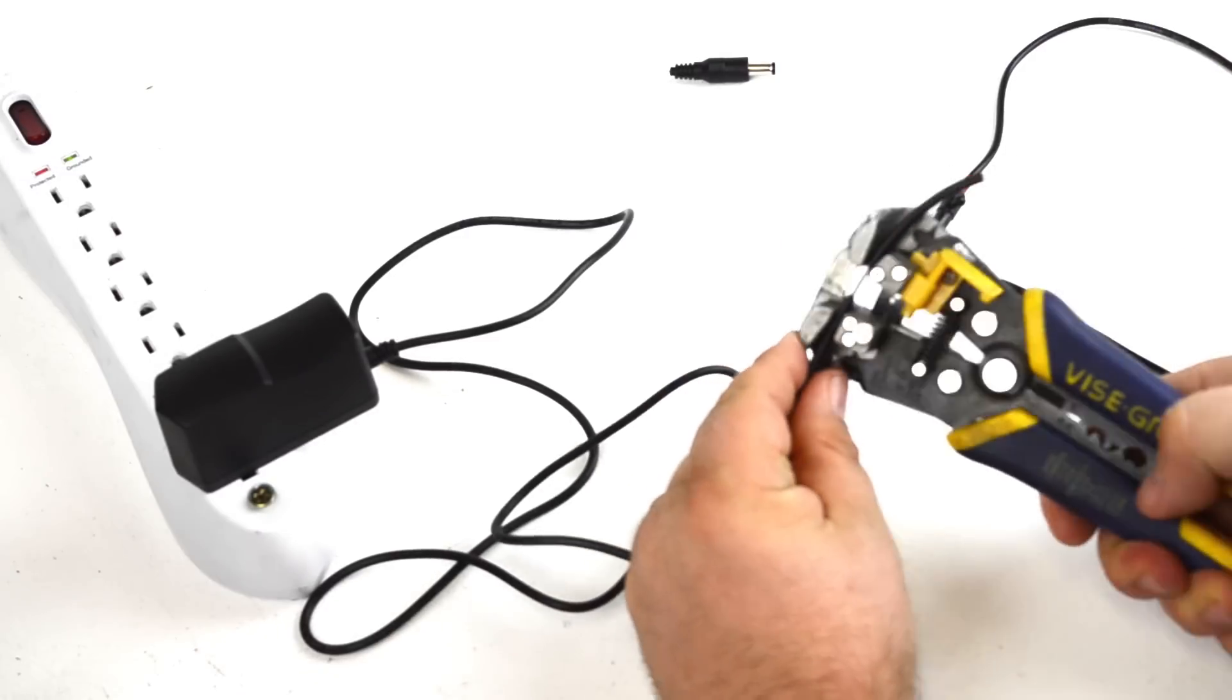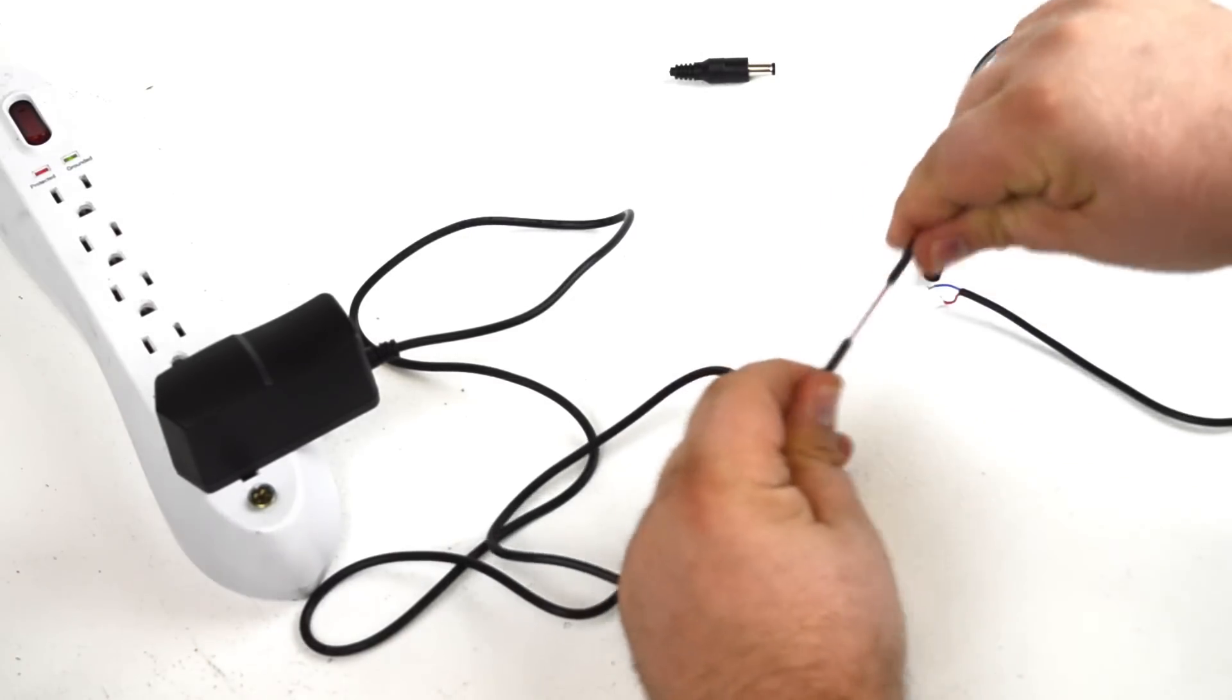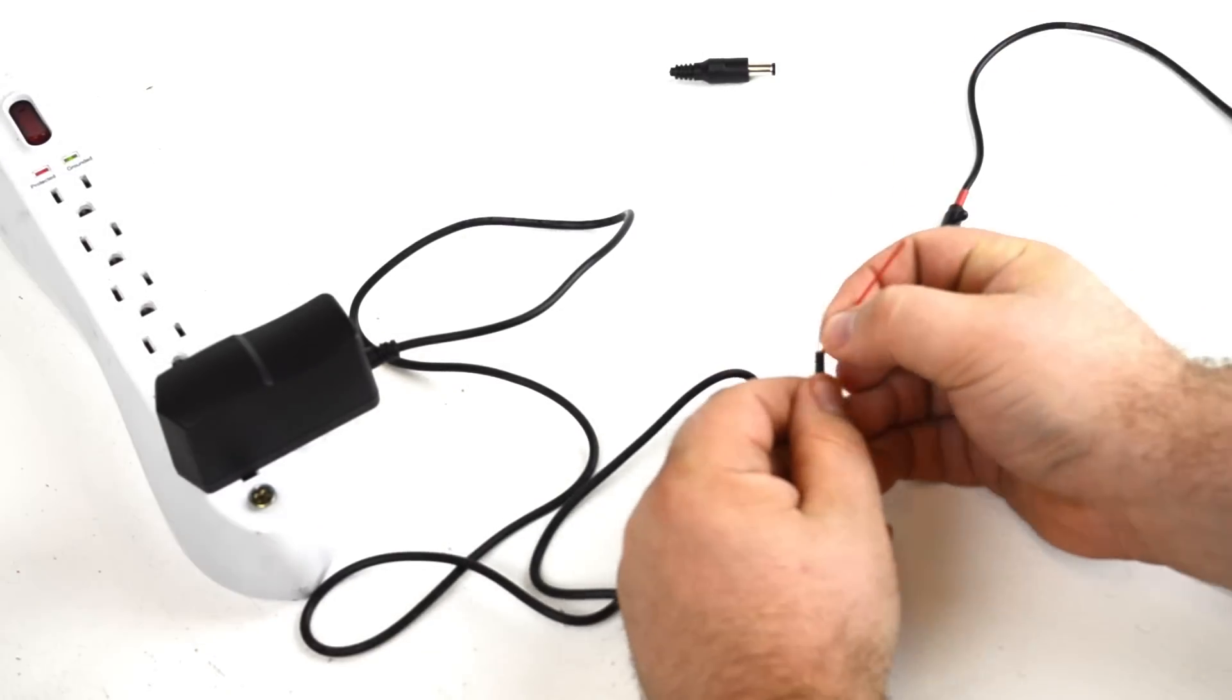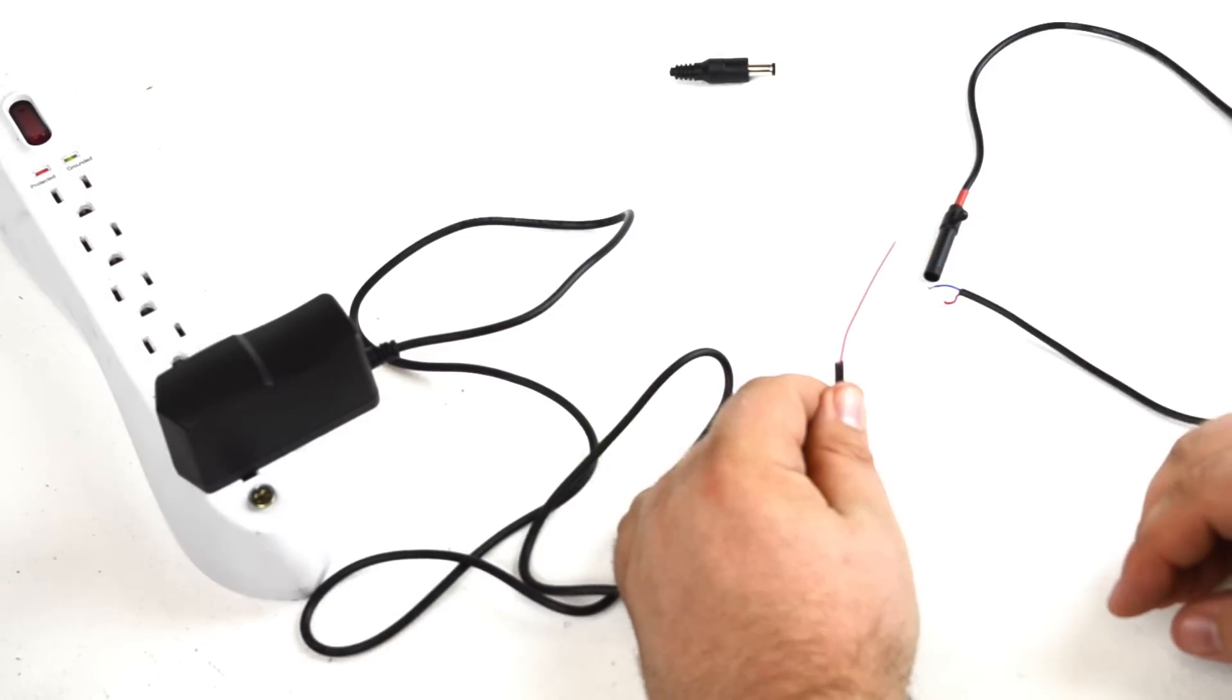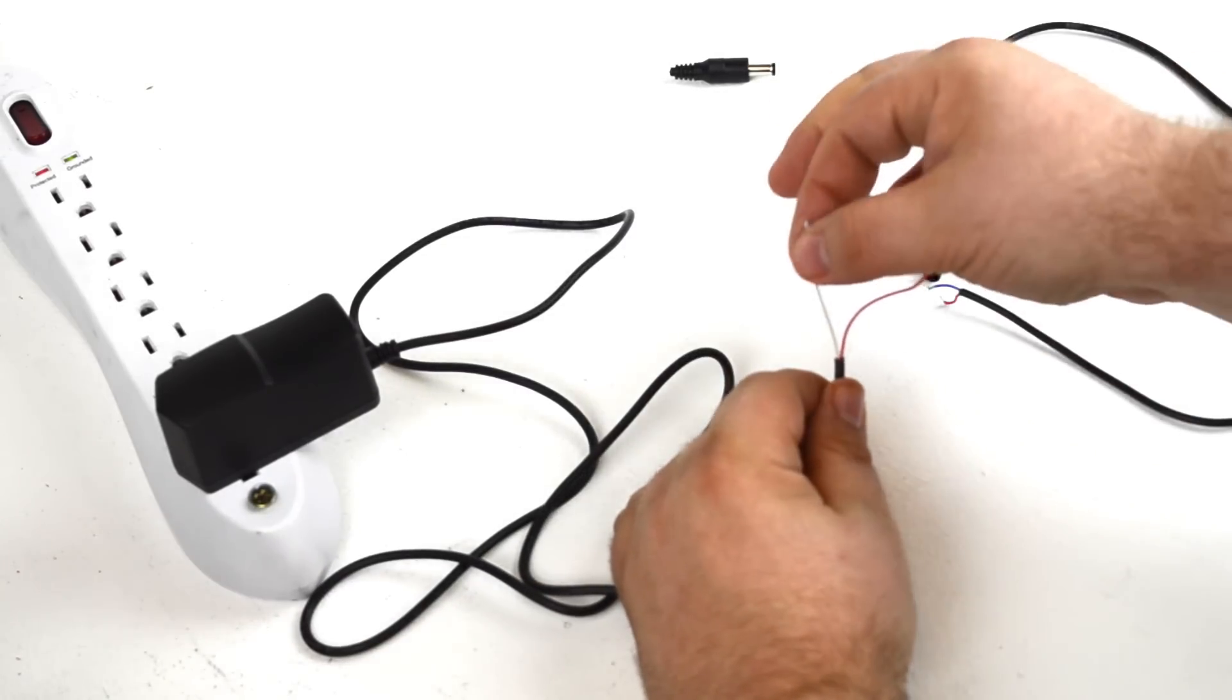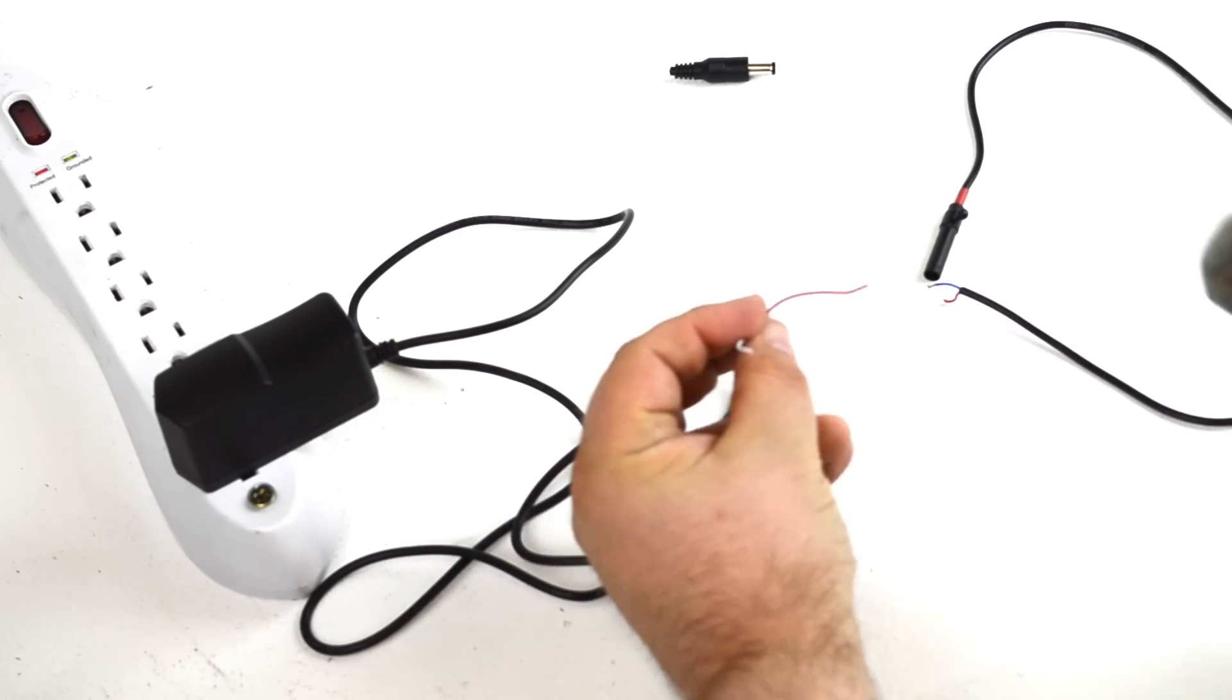So we can take our wire stripper, strip off the outer casing, and you'll see we're left with two wires, a red and a white. That's pretty handy because now we can safely assume that red is positive and white is negative. So we're just going to strip a little bit off the ends.